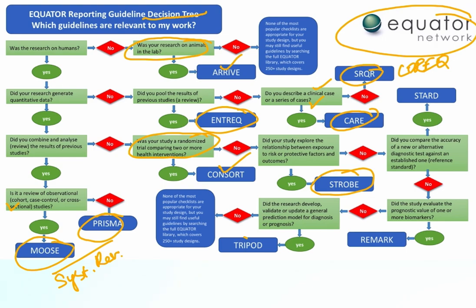For diagnostic or prognostic studies, we need to use either TRIPOD, REMARK, or STARD guidelines based on the situation. If we are looking at the accuracy of a new or alternative diagnostic test against an established one, we use the STARD guidelines. If we are looking at the prognostic value of biomarkers, we use the REMARK guidelines. If we are looking at a general prediction model for diagnosis and prognosis, we use the TRIPOD guidelines.